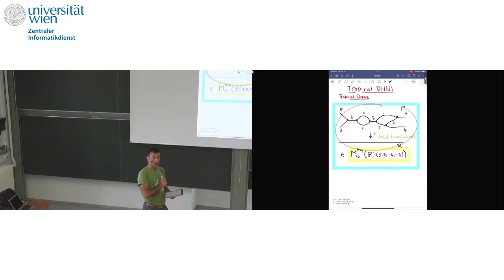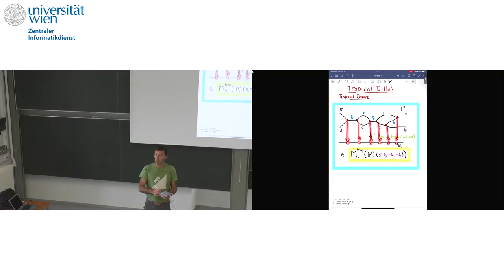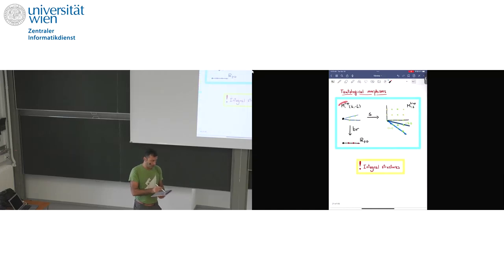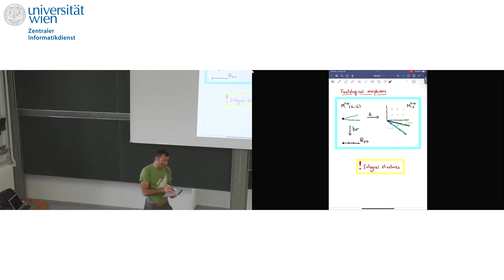If I have a tropical curve mapping to R, I can look at the image of my trivalent vertices. This gives me a collection of points on R. Everything here is done up to a global translation, so I can really assume that the first point is zero. So I have R minus one points in R, giving me a map from my moduli space of covers to a cone, which is R greater than zero to the number of vertices minus one. In the case of M1-trop with ramification (4,4), I had two vertices, so this goes to R greater than zero.